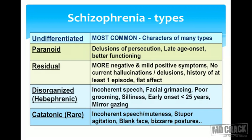Residual schizophrenia presents with more negative symptoms and very mild positive symptoms. The patient has no current hallucinations or delusions but has a history of at least one psychotic episode. There is flat or blunted affect. Disorganized or hebephrenic schizophrenia involves incoherent speech, facial grimacing, and very poor grooming — patients cannot or do not bother to dress themselves properly.